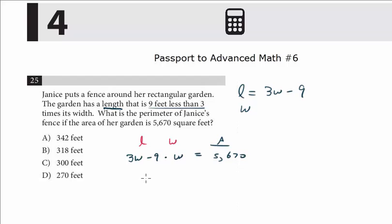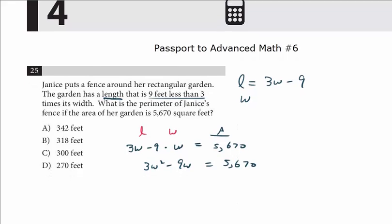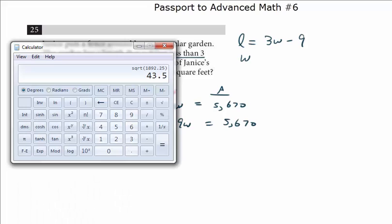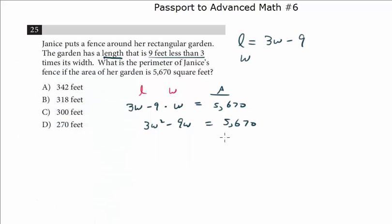If we multiply this out, we get 3W squared minus 9W equals 5670. So we have a quadratic here, and the first step is we have this leading 3. Let's see if 5670 divides by 3 just so we could simplify this. 5670 divided by 3 is 1890. So we're going to reduce this to W squared minus 3W equals 1890.